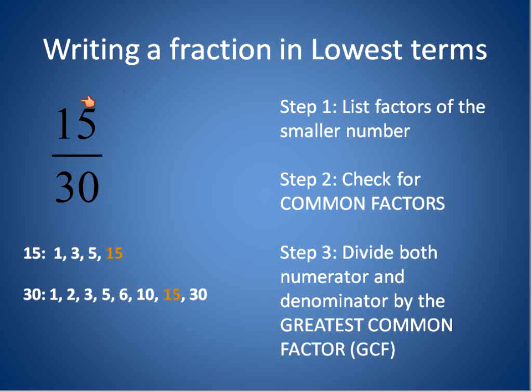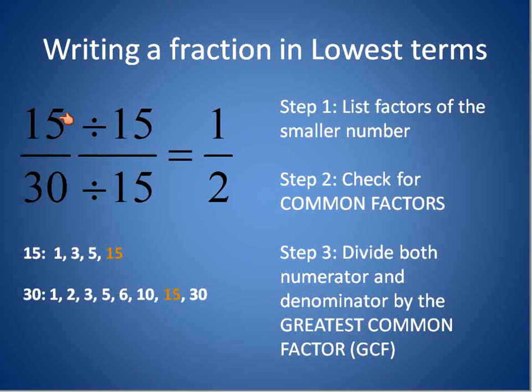To reduce this fraction into lowest terms, we will divide both the numerator and the denominator, both the top and the bottom, by 15. So 15 divided by 15 is 1, and 30 divided by 15 is 2. So we end up with 1 half. Many of you may have noticed 15 out of 30, that is half. 15 is half of 30, so we can rewrite that as 1 half. These are equivalent fractions. And this one is the fraction in lowest terms.